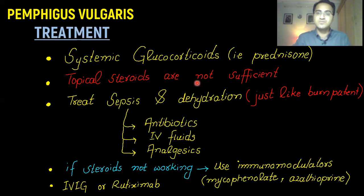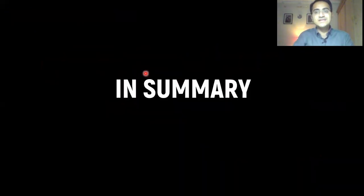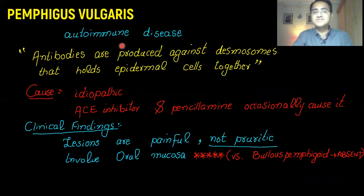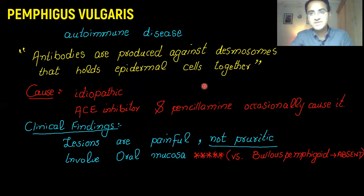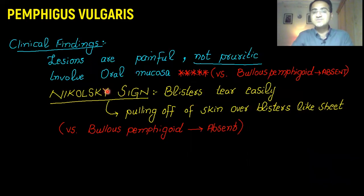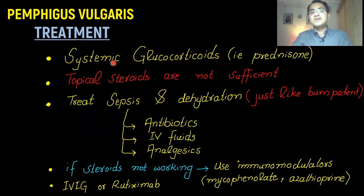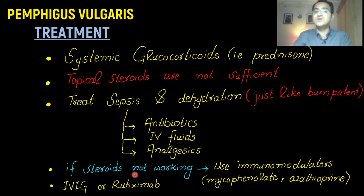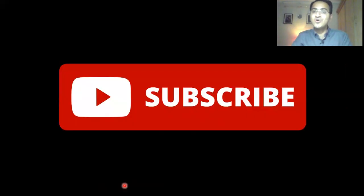In summary, Pemphigus vulgaris is an autoimmune disease resulting from destruction of desmosomes that hold cells together. It is mainly idiopathic; ACE inhibitors and penicillamine can cause it. Nikolsky's sign is positive and lesions are very painful. Systemic steroids are used to suppress the immune system, and the patient must be treated for sepsis and dehydration like a burns patient. If steroids are not working, go for immunomodulators, IVIG, and rituximab. Check out the other videos in the Dermatology Crash Course series.